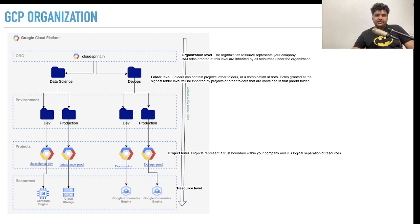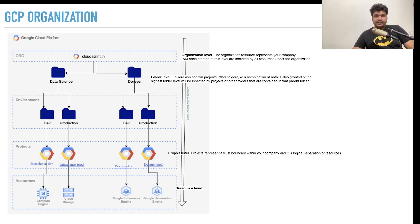The third layer is the project layer. A project represents a trust boundary within your company and is a logical separation of resources. The fourth is the resource layer, which is the minimum level of permissions. That's a decent enough enterprise-level structure which we're going to implement in our labs.